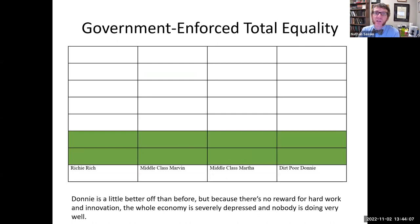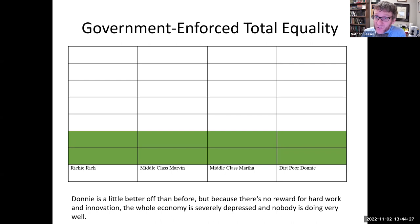Now let's consider a situation in which the government redistributes wealth so that everyone has the same amount. Donnie is doing a little bit better than he was before under the free market. But because there's no reward for hard work and innovation, the whole economy is severely depressed and nobody is doing very well. Because if you start making more money than your neighbors, it's going to be taken away from you — so why bother?